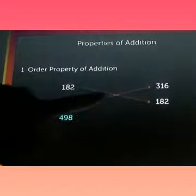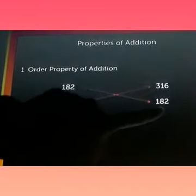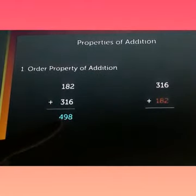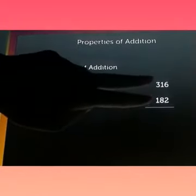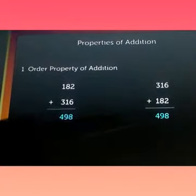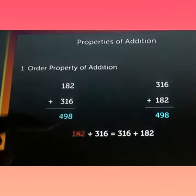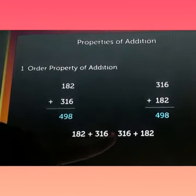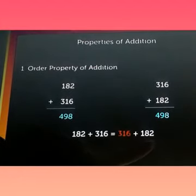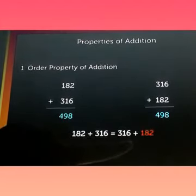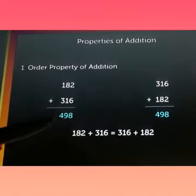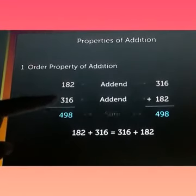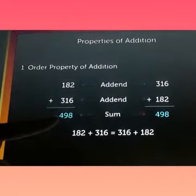Now interchanging the addends: 316 and 182. We are changing the places. The sum we will get will be 498 only. I have just replaced the positions of the addends. As you can see, the sum is the same. So 182 plus 316 equals 316 plus 182. The sum will be the same, 498 in both cases. So even if the position of the addends changes, the sum will be the same.